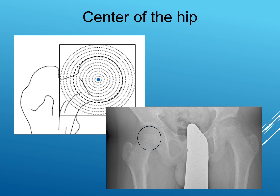First, we need to define some terms we'll use to assess deformity. The center of the hip: the femoral head is round in most of its parts, so the central part of the circle formed by the femoral head is the center of the hip. Here is one of my patients with limb length discrepancy — we define the center of the hip by finding the circle that best fits the femoral head, and its center is the center of the hip.